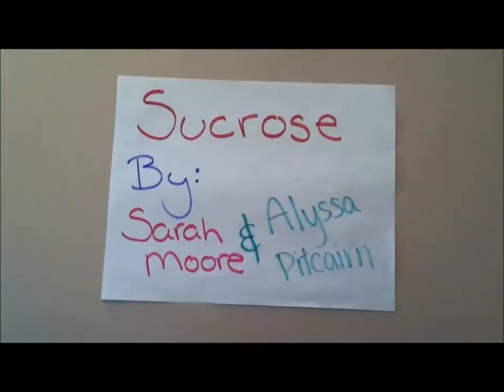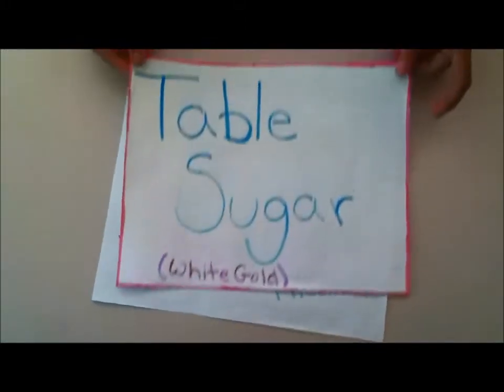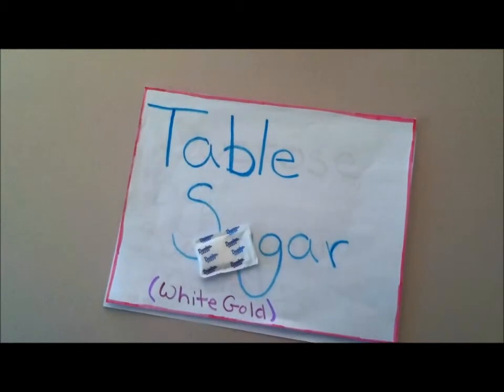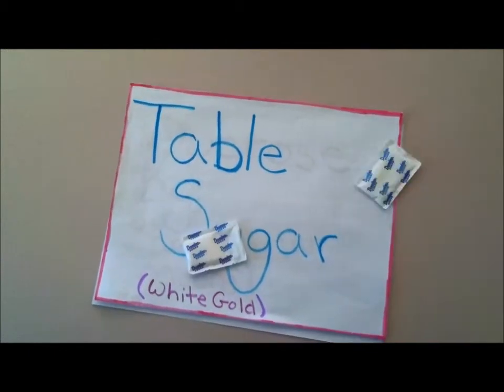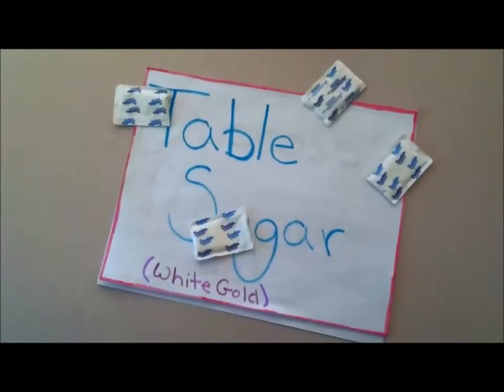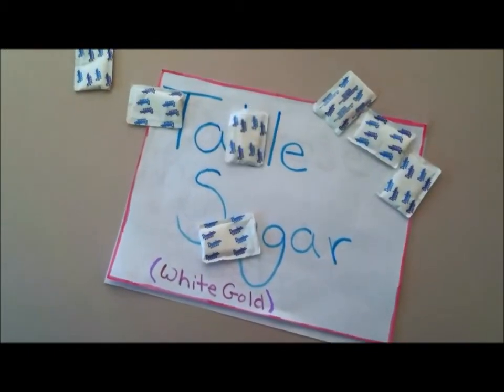Sucrose, by Sarah Moore and Alyssa Pitcairn. Sucrose is commonly known as table sugar. In the 1700s, sugar was referred to as white gold.